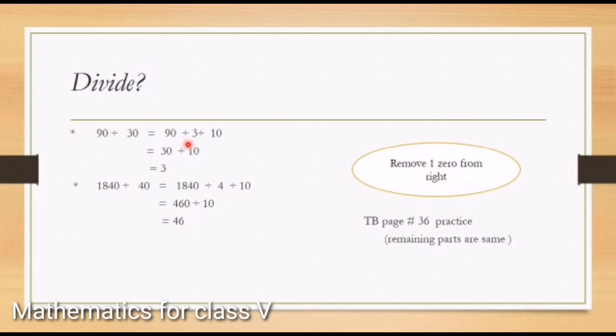Next practice question: 1,840 divided by 40 equals 1,840 divided by 4 divided by 10. We split 40 into 4 and 10. First we divide 1,840 by 4, which gives 460. Then we divide by 10, removing one zero from 460, and the answer becomes 46.